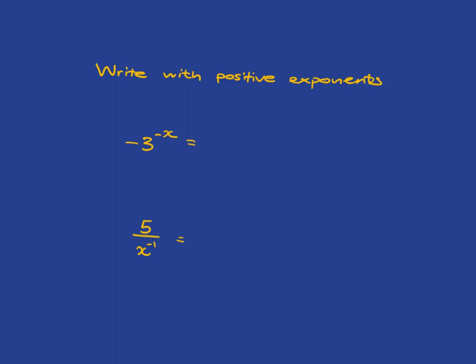Alright, so for the first one, this negative here is just telling you that the whole of this thing here is negative. So, it will remain negative. But then we've got to deal with the exponent, and what we've got is 3 to the negative x. We know the negative in the exponent simply means 1 over, so we've got negative 1 over 3 to the x.